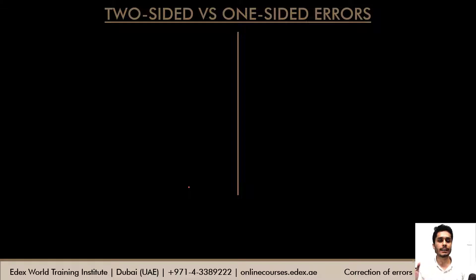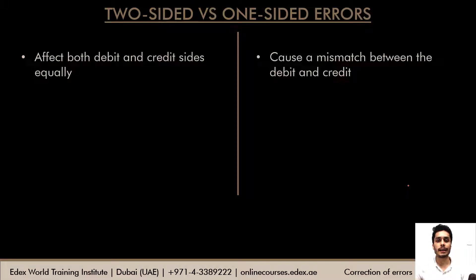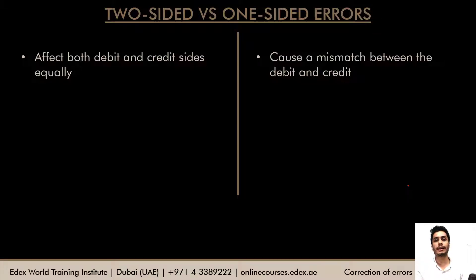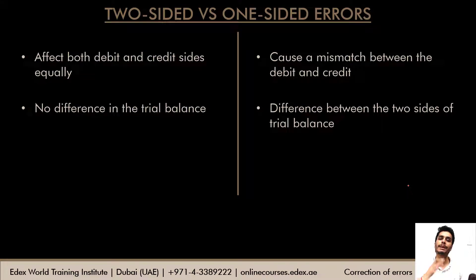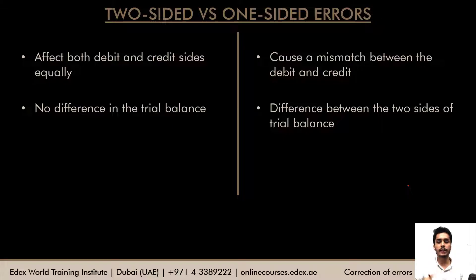Understanding the difference between two-sided and one-sided errors: two-sided errors affect both debits and credits in any entry equally. In a one-sided error, debits and credits are not equal — the debit amount would be different from the credit amount. In a two-sided error the trial balance will match because debit and credit entries have been passed equally, but in a one-sided error, where there's a mismatch, the trial balance will not match.